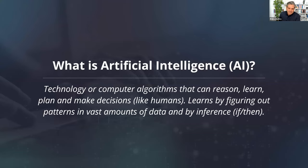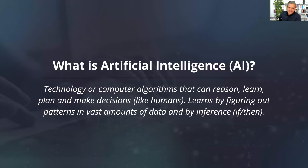A basic definition of artificial intelligence is a technology or computer algorithm that can reason, learn, plan, and make decisions just like humans, but now a computer can do it. It learns by figuring out patterns in vast amounts of data and by inference — if-then statements. It takes billions of sources of data and is able to reason when you ask it a question by predicting the probable outcome.